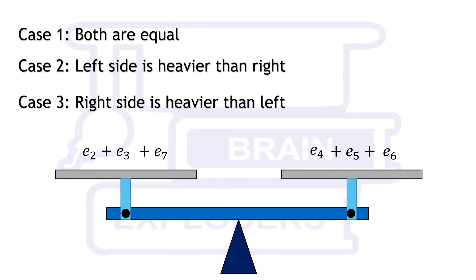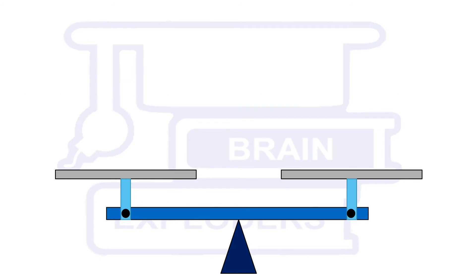Now depending upon our first reading we will take our second reading. Suppose in first reading we find that one of the elephants among fourth, fifth and sixth has lost its mass. Now make an arrangement such that one of these elephants is on left side, another one on right side and third one on none of the sides. Here if balance scale shows that both sides are equal then third one has lost its mass.